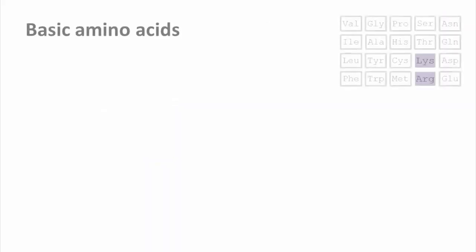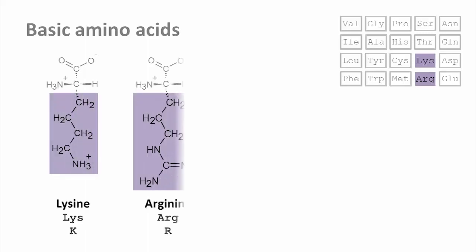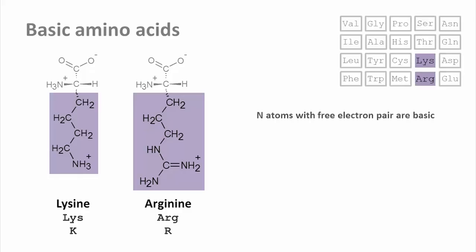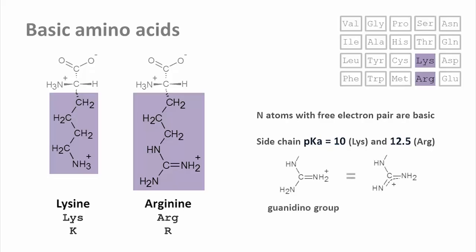Finally, the basic amino acids. We have already met one of them, histidine. However, because of its low pK of 6, it is mostly uncharged under normal conditions. Lysine and arginine, in contrast, are very strong bases because the free electron pairs of the terminal nitrogen atoms are very good proton acceptors. Arginine is by far the strongest base because the positive charge of the protonated form, the conjugate acid, can be delocalized over the guanidino group.